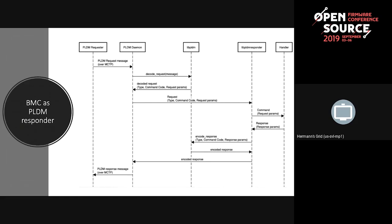If the BMC wants to be a PLDM requester, can it use libpldm? The most common case is the BMC talking to an option device, where the BMC is a responder and the host is using PLDM to access the BMC. But libpldm itself has APIs that serve both the requester and responder flows. So to answer your question — if the BMC is acting as the requester, the specific BMC application implementing that requester functionality can make use of libpldm to encode outgoing requests. I actually have a slide on the requester flow as well.